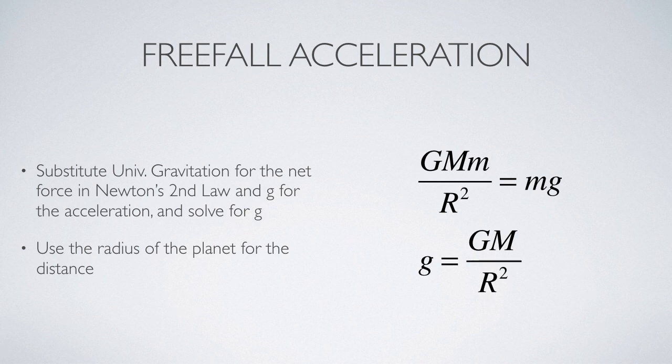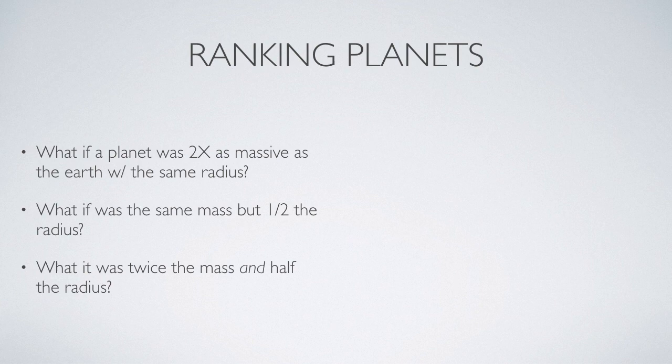We can use this idea about universal gravitation to determine what the freefall acceleration on the surface of a planet would be. We substitute Newton's law of universal gravitation in for the net force because if an object is in freefall, gravity is the only force acting on it. Then we substitute in g for the acceleration and solve both sides. The notation I switch to on this slide is common in your textbook where the mass of the main attracting body is done with capital M, and the falling or orbiting body is done with a lowercase m. So this tells us that the gravitational acceleration is proportional to mass and inversely proportional to the radius of the planet.